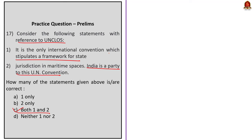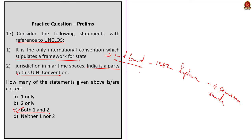UNCLOS is an international treaty adopted and signed in 1982. It replaced the four Geneva Conventions of April 1958, which concerned the territorial sea and contiguous area, the continental shelf and high seas, and fishing and conservation of living resources. The convention created three institutions: an International Tribunal for the Law of the Sea, the International Seabed Authority, and the Commission on the Limits of the Continental Shelf. UNCLOS is the only international convention stipulating a framework for state jurisdiction in maritime spaces, and India is a party to it.